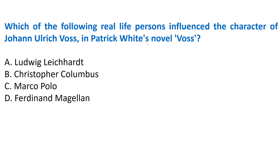Next question: 'Which of the following real life persons influenced the character of John Ulrich Voss in Patrick White's novel Voss?' Options: A) Ludwig Leichhardt, B) Christopher Columbus, C) Marco Polo, D) Ferdinand Magellan. The correct answer is Option A - Ludwig Leichhardt, who was a German explorer. He influenced the characterization of John Ulrich Voss in Patrick White's novel Voss.